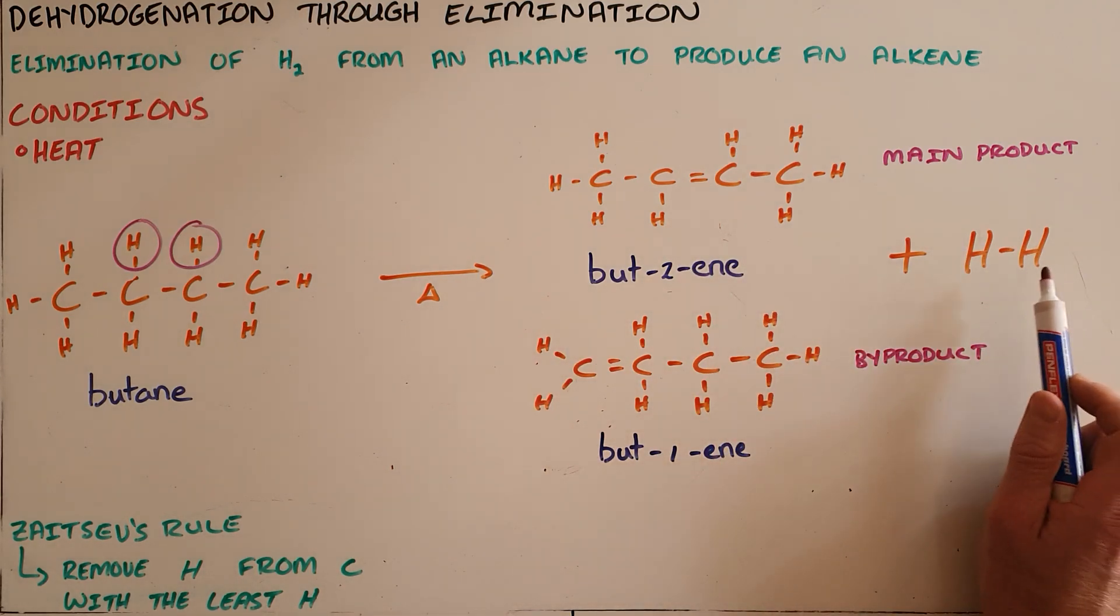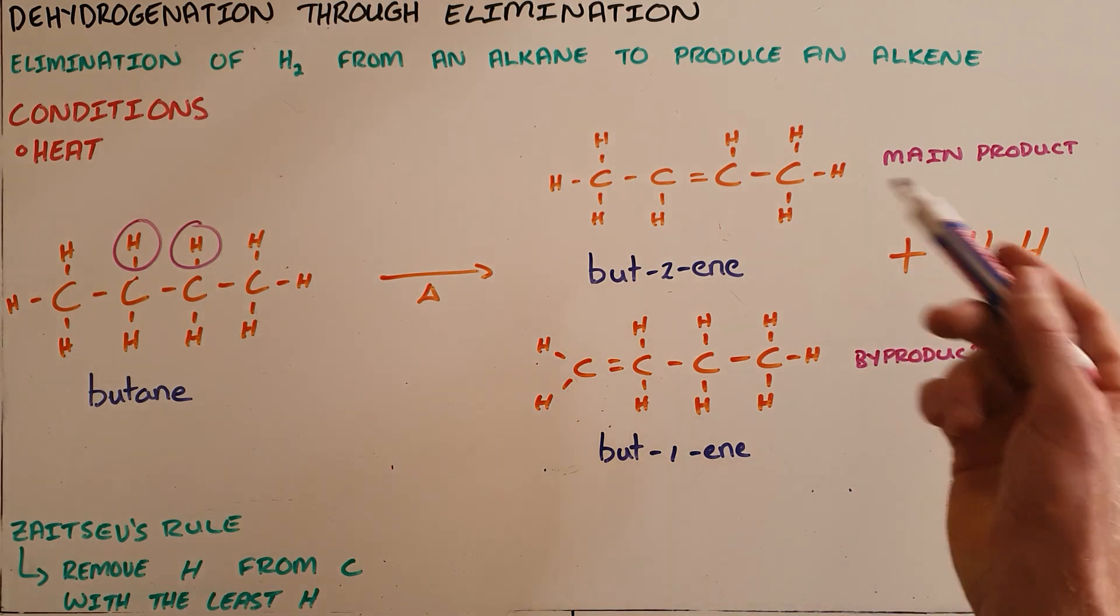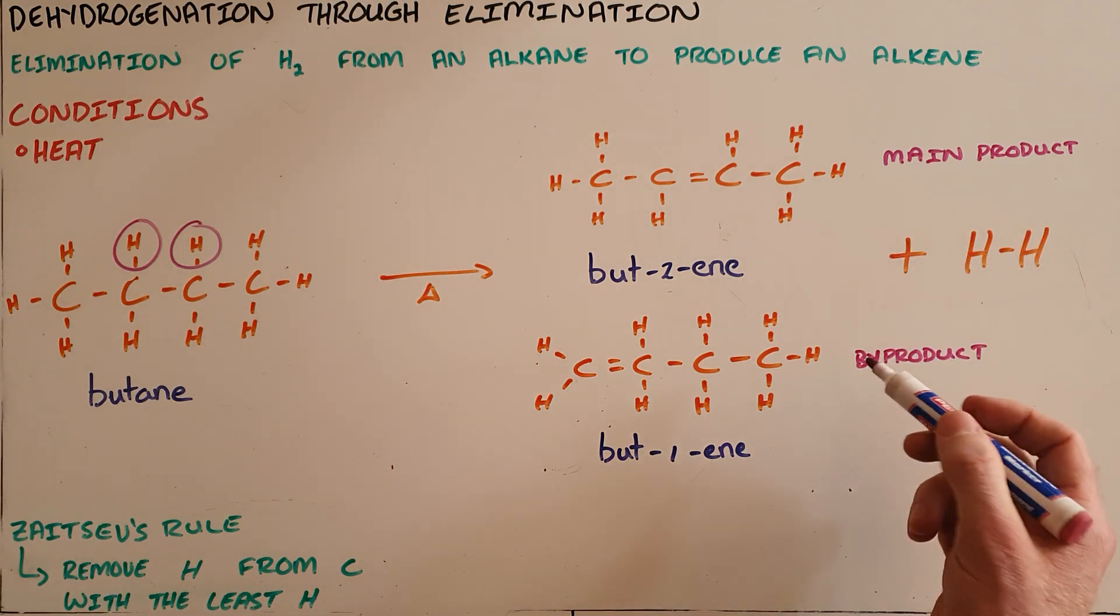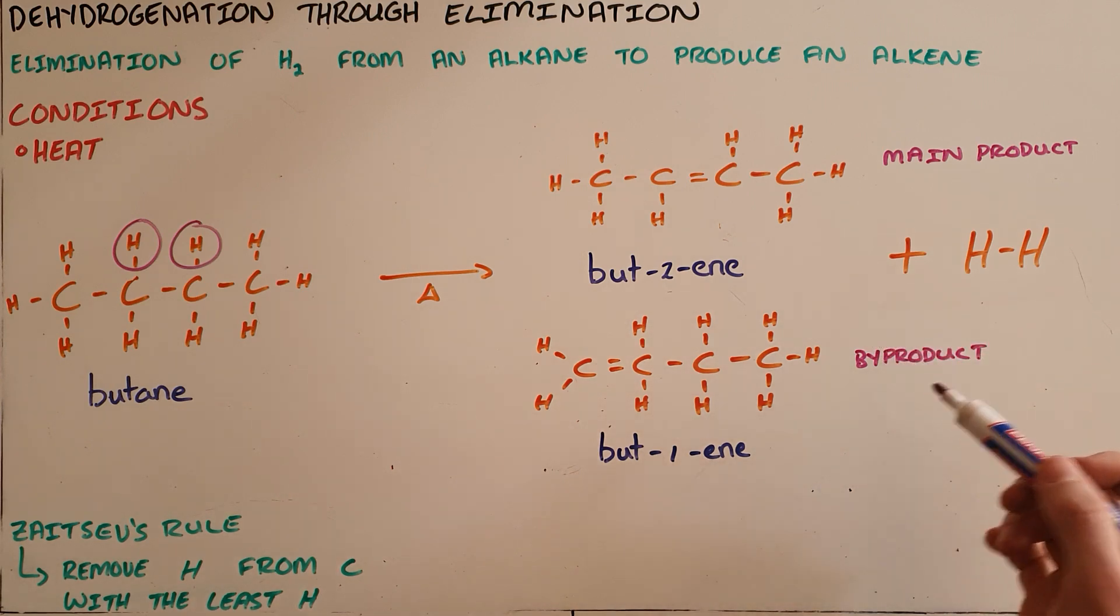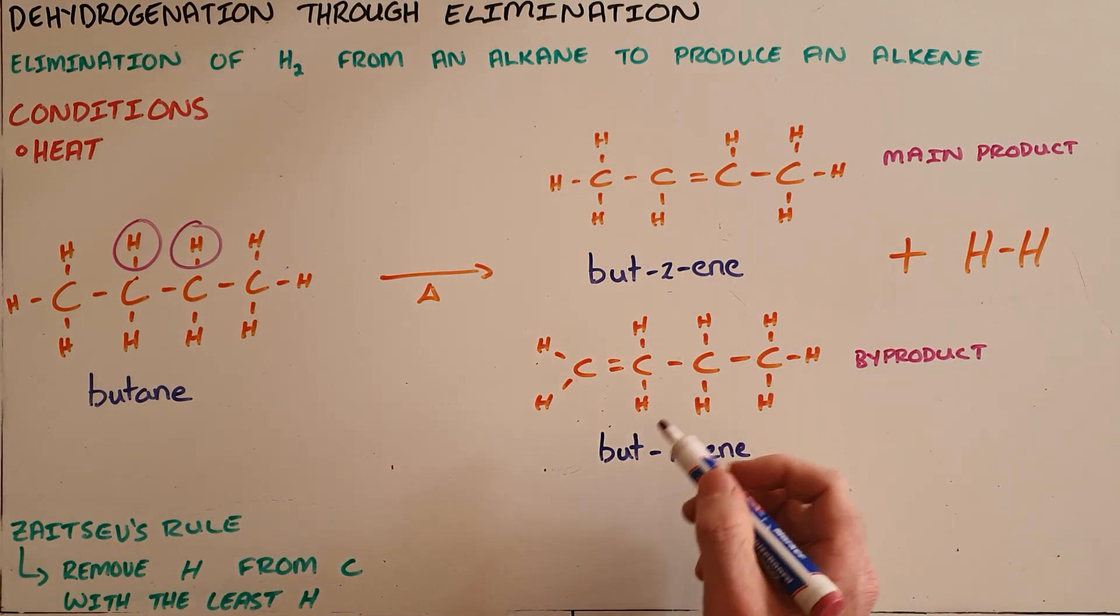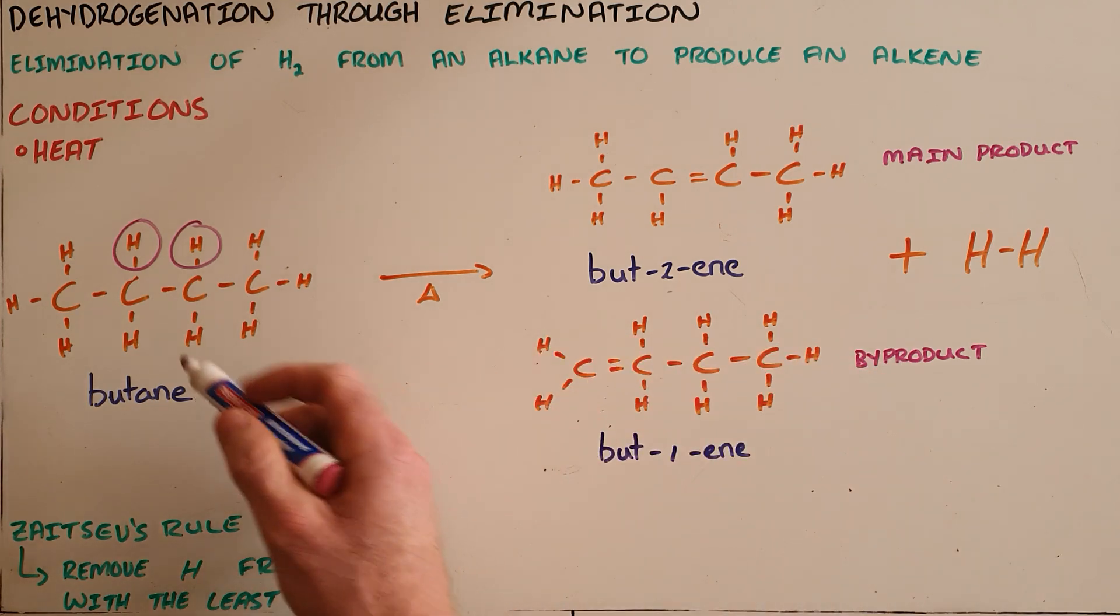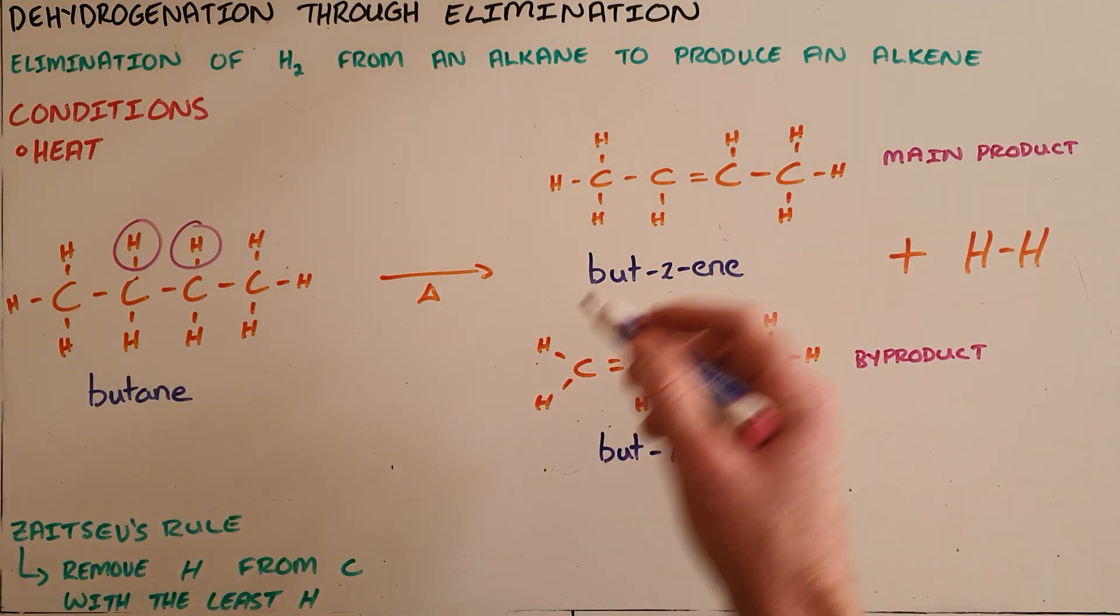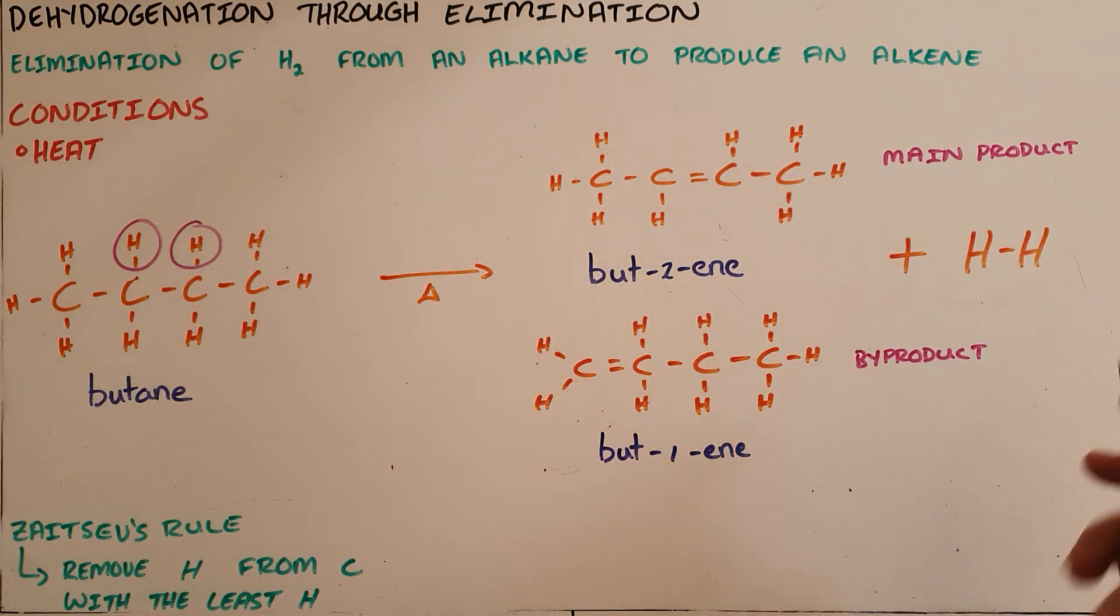It's also possible, though it occasionally happens, that a by-product is formed where Zaitsev's rule is not followed. However, when drawing this reaction, we would only show the main product and hydrogen that are formed.